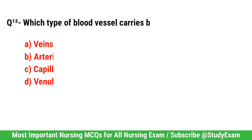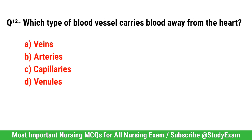Question No. 12. Which type of blood vessel carries blood away from the heart? Correct option is B. Arteries.